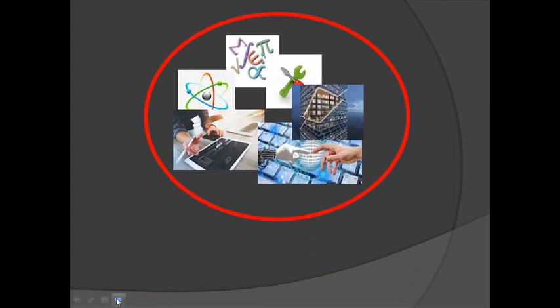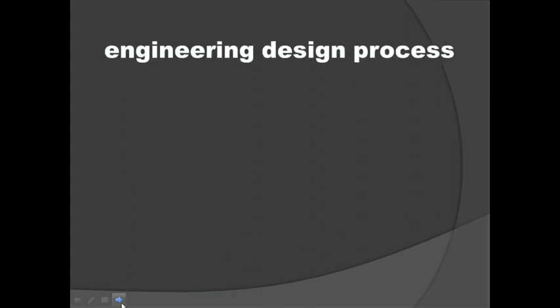All these things were once designed by engineers using engineering design process. One of the components of engineering design process is design concept. Design concept has two categories: traditional and modern concept.